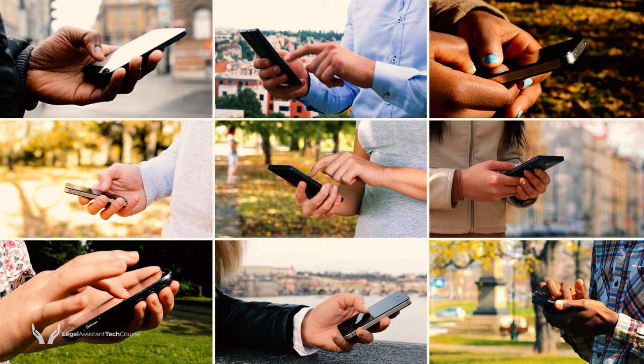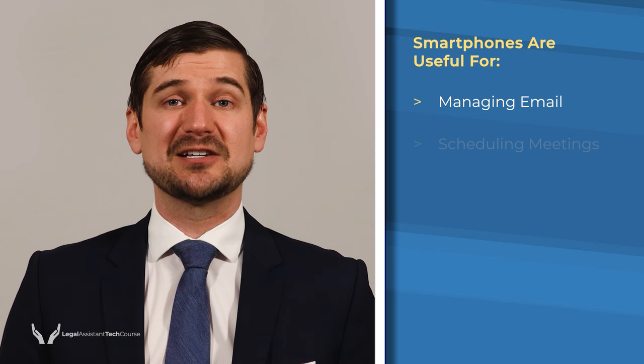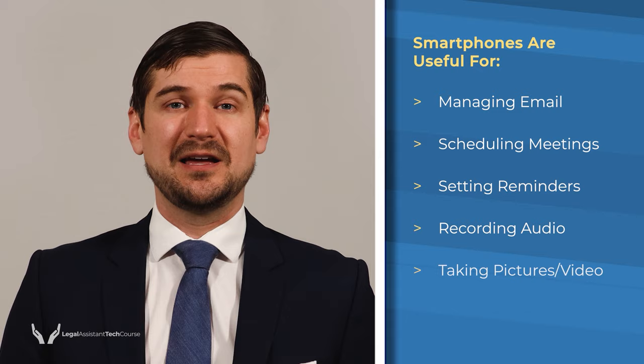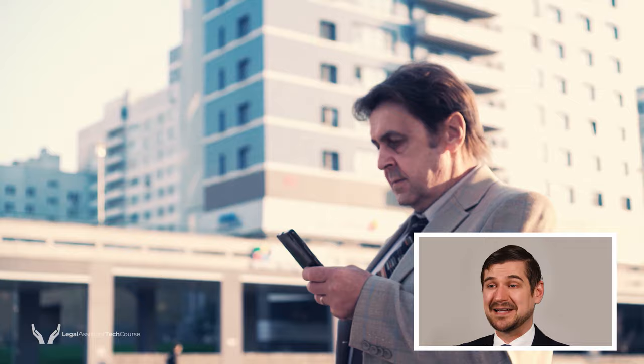As smartphones continue to advance, they'll continue to offer new tools which can be used to help get work done quicker and easier. In their current forms, smartphones are incredibly useful for managing email, scheduling meetings, setting reminders, making audio recordings, taking pictures and video, and communicating with people by phone and text message. If you don't have a smartphone or don't use one as part of your work, you may want to consider some of the ways that using one could benefit you. The way that I use my smartphone may not be for everyone; however, the goals that I'm seeking to achieve do apply to everyone — namely, improving access and capabilities while mitigating distraction.